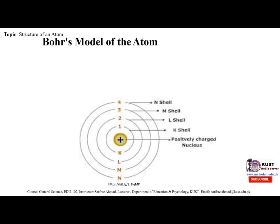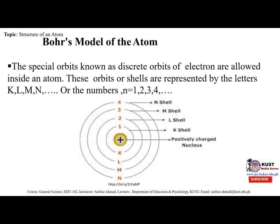In the Bohr model, the atom has a positively charged nucleus. The first circular orbit around the nucleus is called the K-shell, the second is the L-shell, the third is the M-shell, and the fourth is the N-shell. These special orbits, known as stationary orbits, are the allowed positions for electrons inside an atom. These orbits or shells are represented by the letters K, L, M, N or the numbers n = 1, 2, 3, 4.